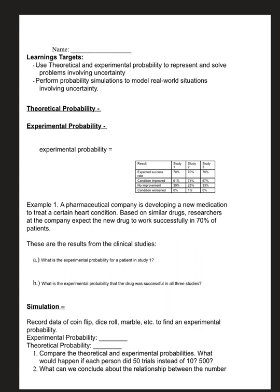Theoretical probability is how we mathematically describe what should happen. So when we toss a coin we should get heads or tails — a 50% chance either way, one half. When we roll a die, there's a one-sixth chance of getting any of the numbers.